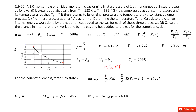Cv equals 3R/2, and n, R, T2, T1 are all given, so you get the answer. For the heat: since this is an adiabatic process, Q equals 0. Then using ΔU equals Q minus W, since Q is zero, work equals negative ΔU. So you get the work done for the adiabatic process.